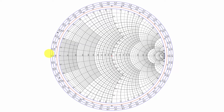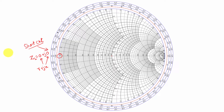First, let us understand what voltage maxima and voltage minima are. As we know, this point on the Smith chart has load impedance equal to 0 plus j0, because the real part and imaginary part are both 0. So if the load impedance is 0, that point is called a short circuit. Since there is a short circuit, voltage will be minimum — hence we call this the voltage minima point. Our voltage minima point is here, at position 0 lambda or 0.5 lambda, since both are the same point.